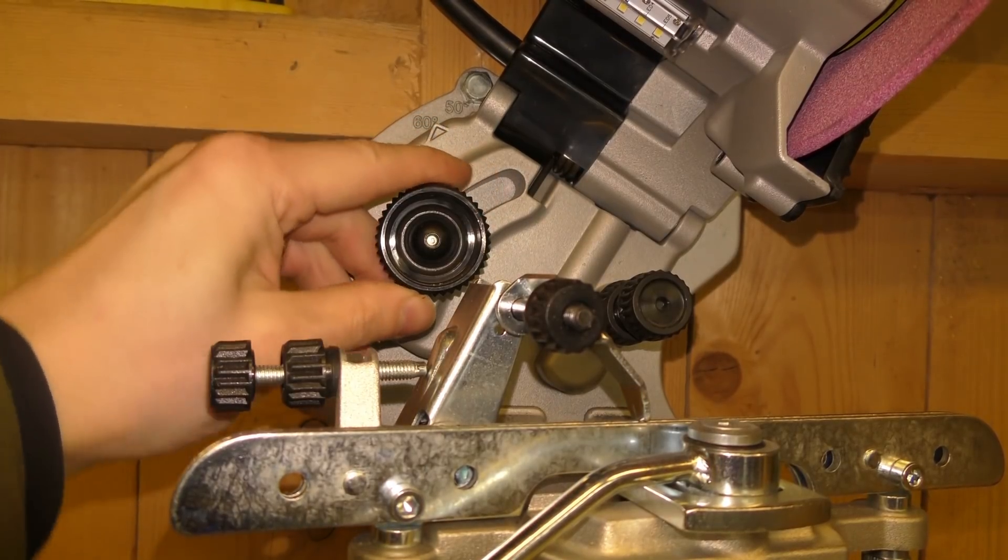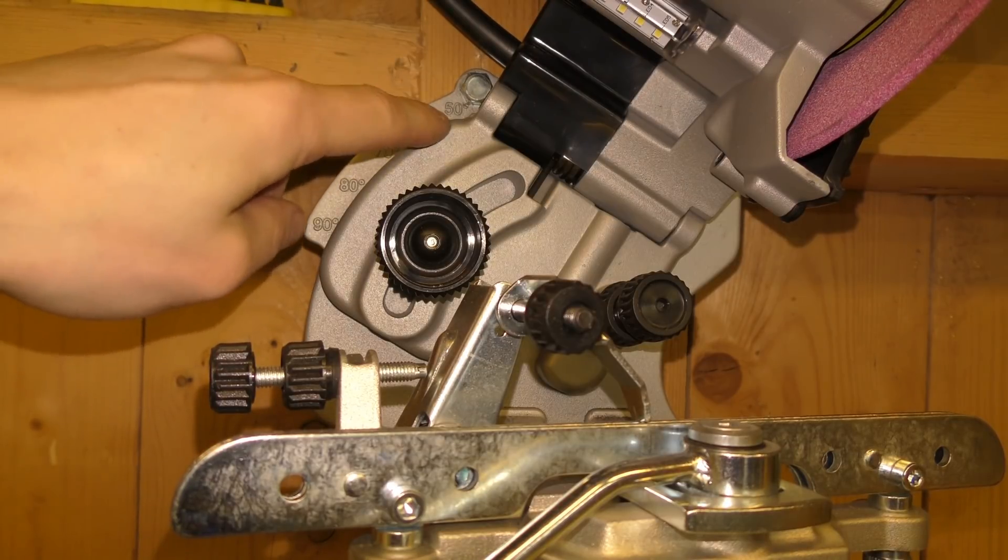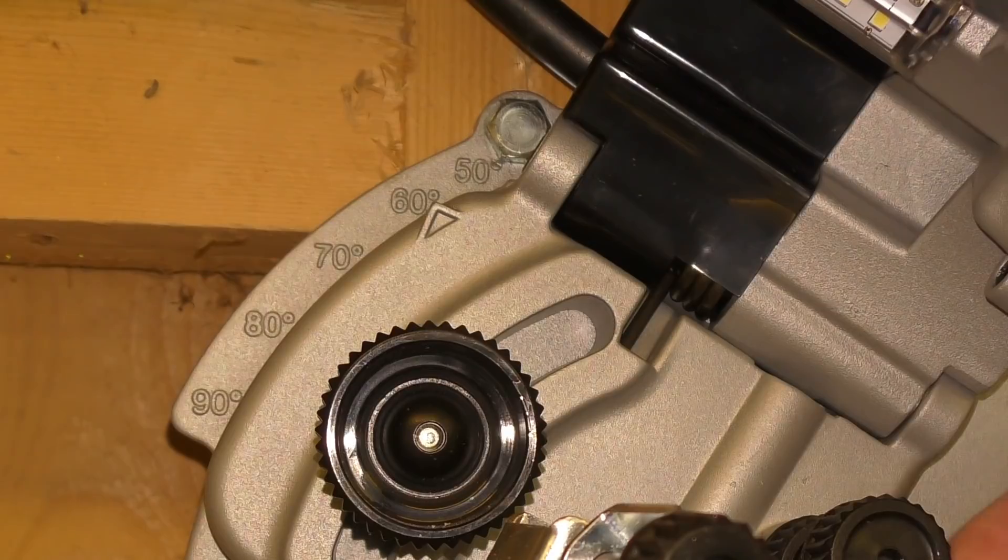With this knob, you set the angle that the disc will meet the chain. For ripping chains, I set it to 60 degrees. That has been proving the best angle for my chains.